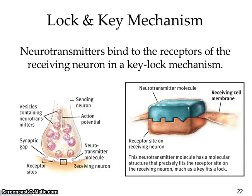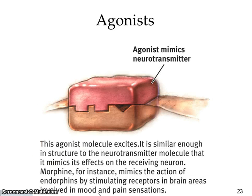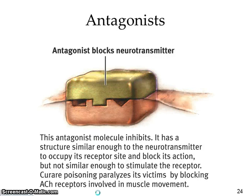Neurotransmitters bind to the receptors of the receiving neuron via a lock-and-key mechanism — when the message is received, they lock onto each other and the process continues. Agonists are molecules that excite and mimic neurotransmitters — for example, morphine mimics endorphins, which are your body's natural way of relieving pain. Antagonists block a neurotransmitter, preventing its reception.